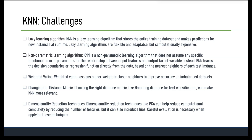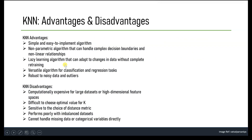Dimensionality reduction techniques like Principal Component Analysis (PCA) can help reduce the number of features while preserving most of the variance in the data, making the distance metric more meaningful and reducing computational complexity. However, care should be taken as dimensionality reduction can also lead to loss of information. In summary, the advantages of KNN are: it is simple and easy to implement, non-parametric, a lazy learning algorithm that adapts without retraining, versatile for both classification and regression, and robust to noisy data.